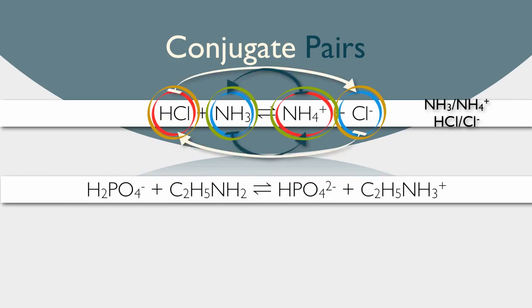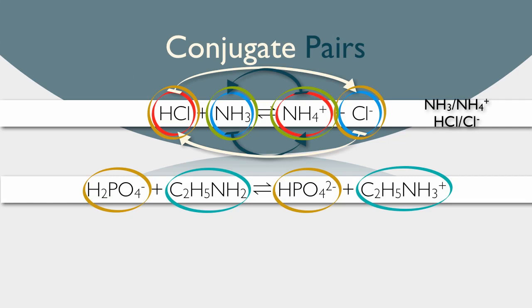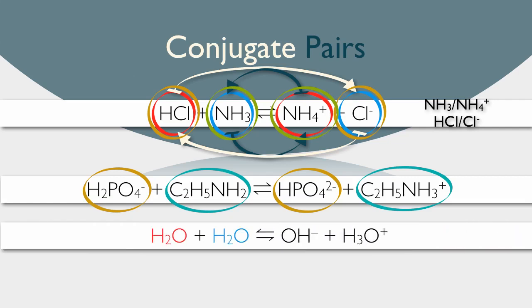Here we have dihydrogen phosphate ion and monohydrogen phosphate ion, its conjugate acid. We also have ethylamine acting as a base and its conjugate acid. Of course, water, being amphiprotic, can be its own conjugate base and conjugate acid.